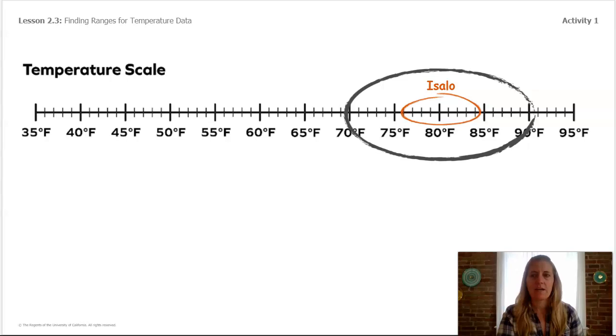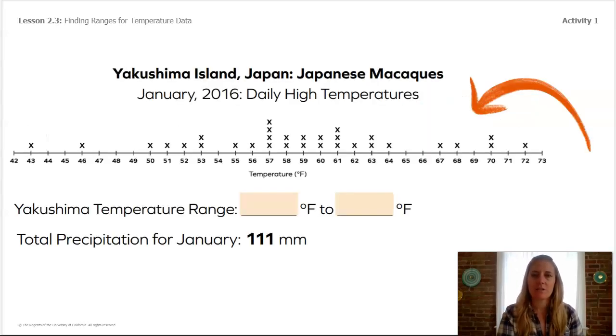Now, we'll look at another reserve where the macaques live. This is Yakushima Island in Japan. Already, what do you notice about the range of temperatures for this primate?